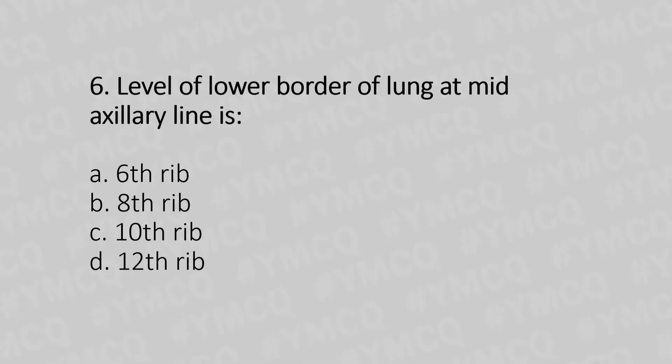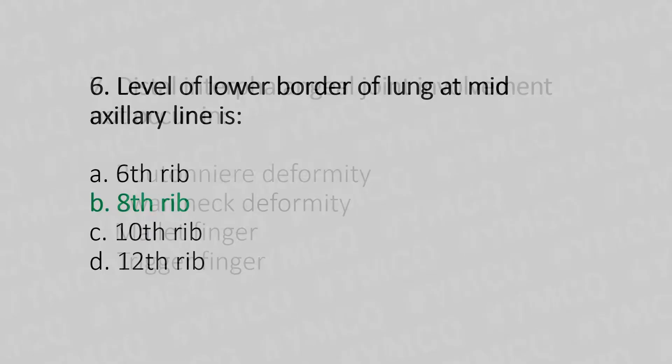Question 6: Level of the lower border of the lung at the mid-axillary line is — Option A: sixth rib. Option B: eighth rib. Option C: tenth rib. Option D: twelfth rib. The answer is option B — eighth rib.